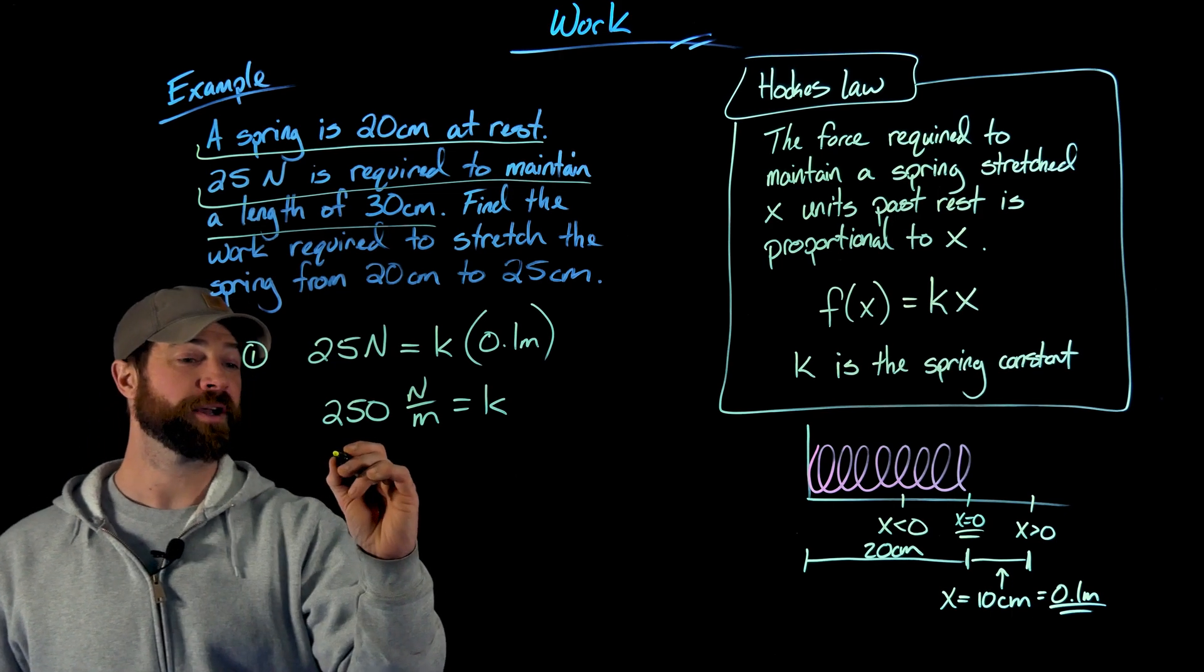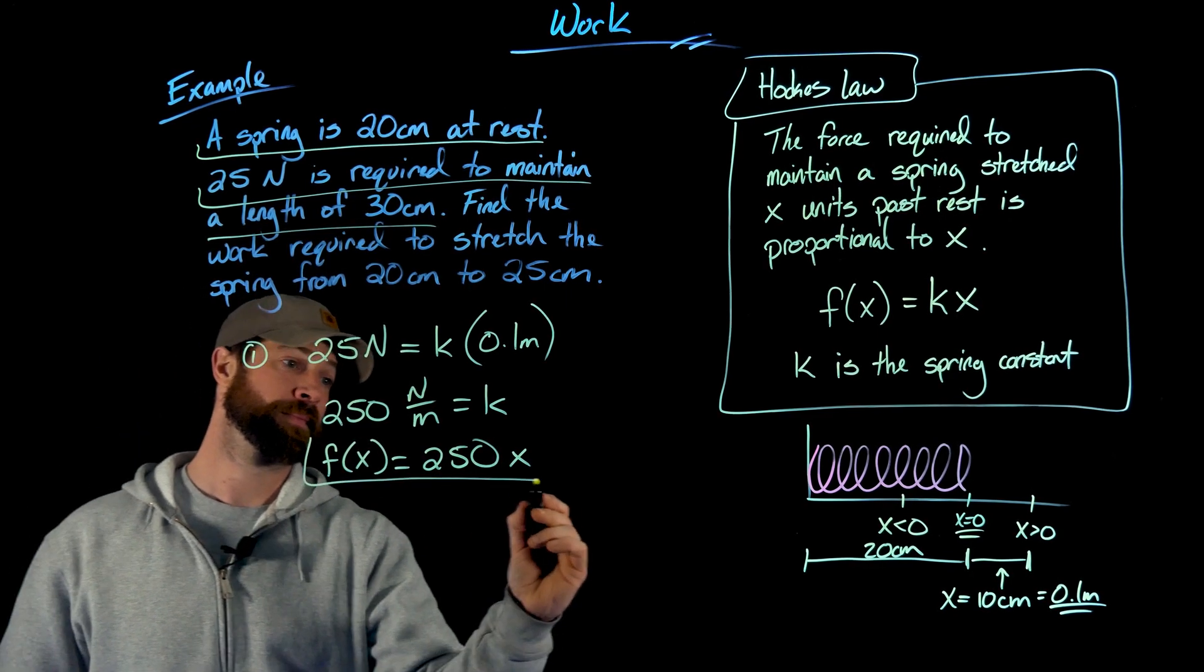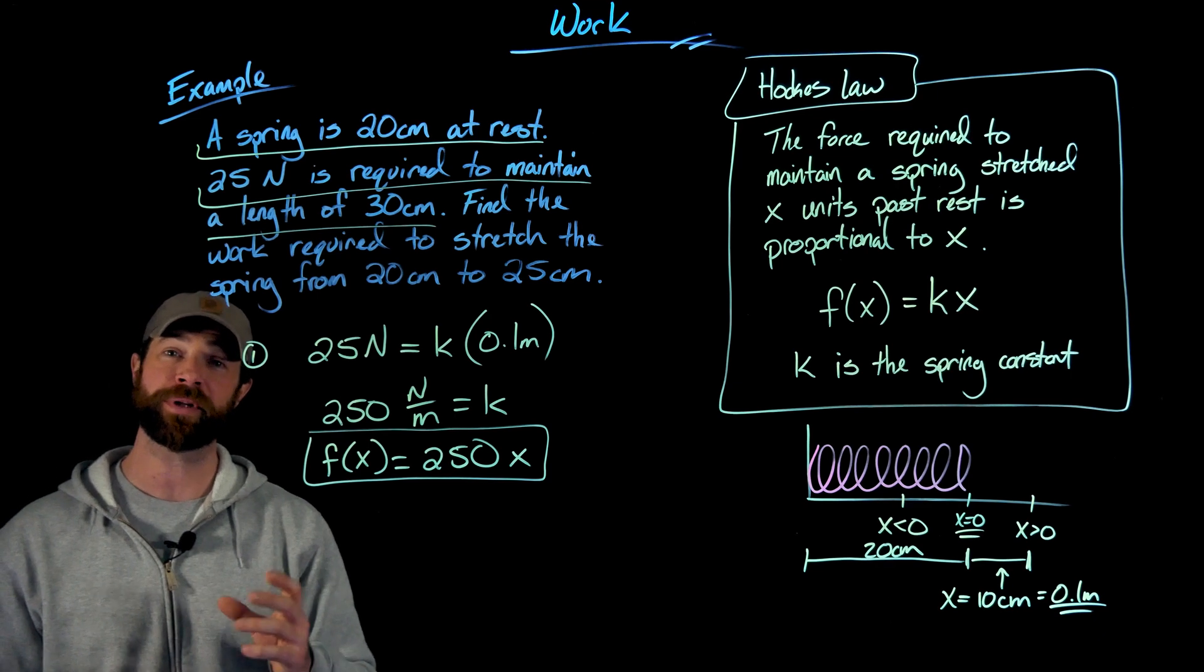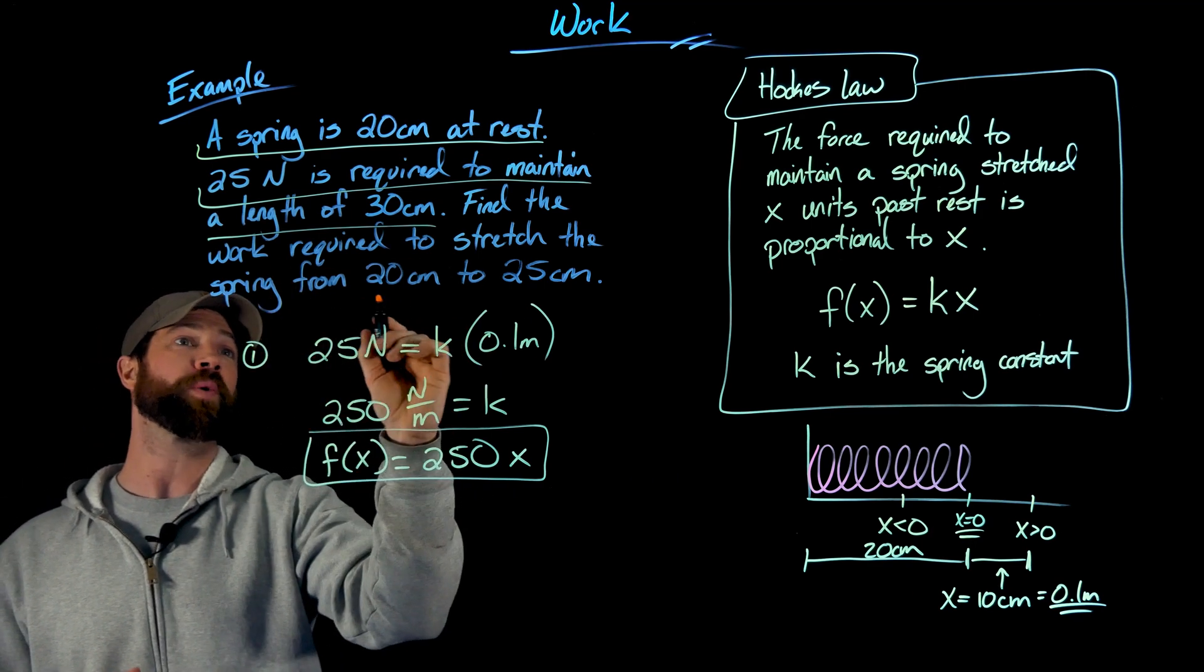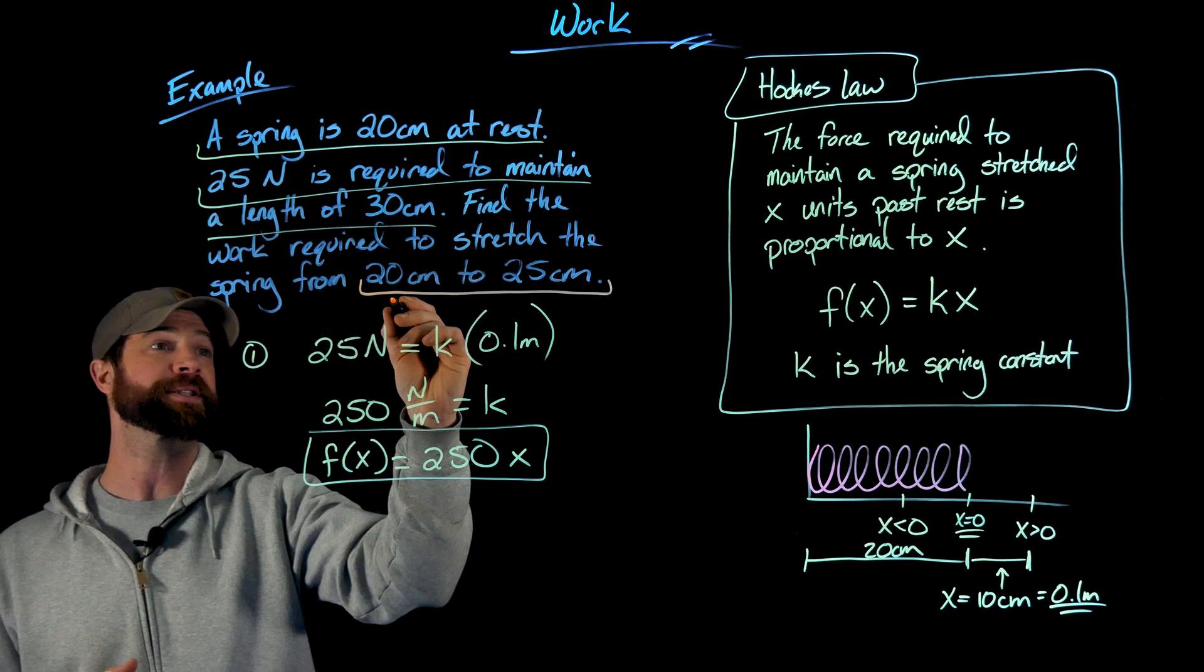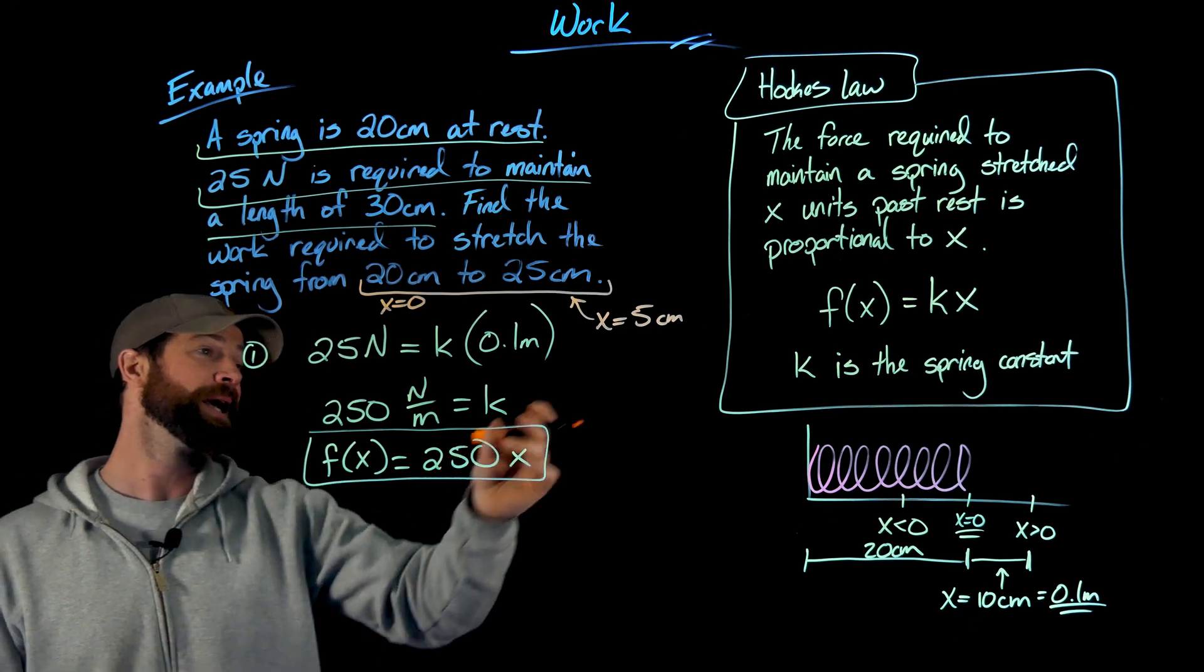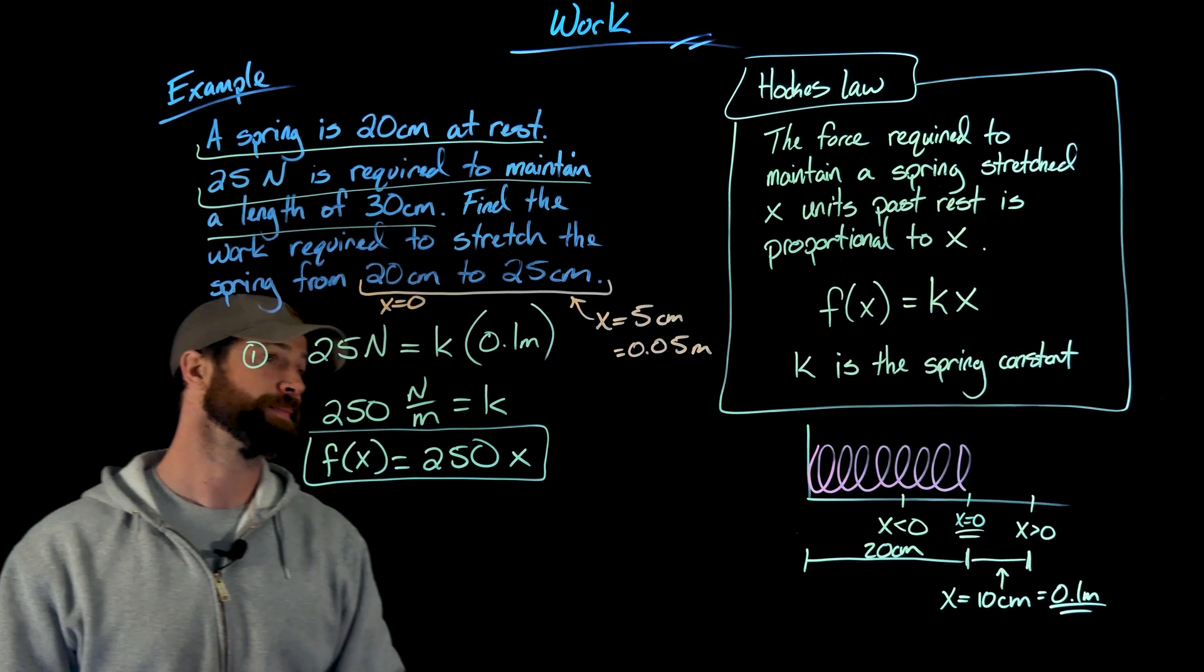Thus, for this spring, we know the force function is 250x. So we found our force function. And we know from the previous conversation that to calculate work, all we need to do is integrate the force function on our interval. In this case, we're dealing with x. X is this distance away from equilibrium. Specifically, we need the work required to go from 20 centimeters to 25. This is important to know both of these because 20 centimeters is when x equals 0. So that's at rest or equilibrium. 25 centimeters means x equals 5. Again, the displacement from rest. But I'm not going to write it as centimeters. As always, I'm going to write this in terms of meters.